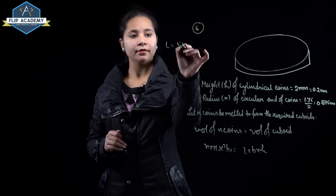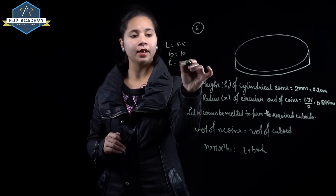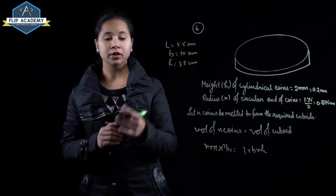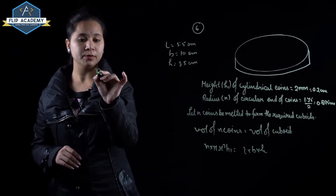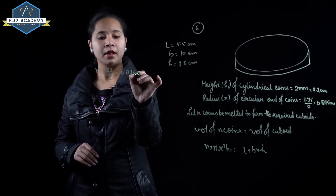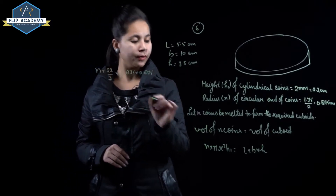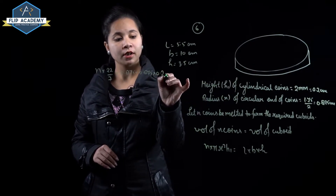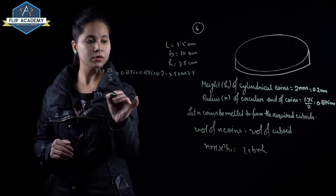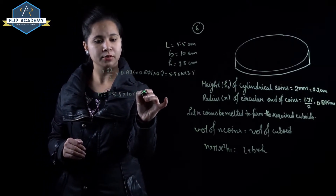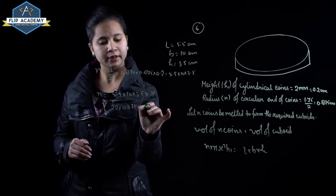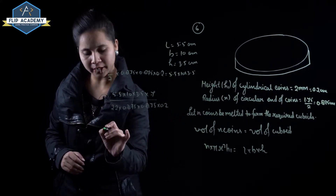Given cuboid dimensions: length = 5.5 cm, breadth = 10 cm, height = 3.5 cm. Substituting: n × (22/7) × 0.875² × 0.2 = 5.5 × 10 × 3.5. Solving gives n = 400 coins.